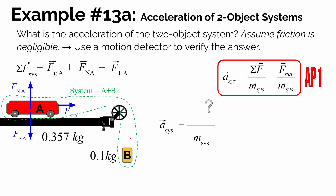Object B is also connected to the string, so there's a tension force pulling up on B — because ropes always pull, never push. And since object B has mass (about 0.1 kilograms), it also feels a gravitational force downward. So on our system, we have five individual forces in total.